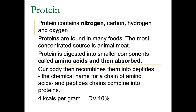Proteins are found in many foods, the most concentrated source being animal meat, but also things like dairy and eggs as well as nuts and grains all contain significant amounts of protein. When you eat protein it gets digested into smaller components called amino acids before being absorbed, and then our body recombines them into things called peptides — a chain of amino acids — which eventually becomes an enzyme, protein, or hormone of some kind.